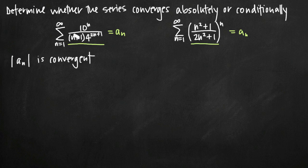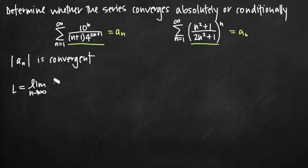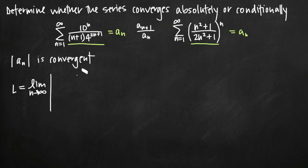In this first example, we have the infinite sum from n equals 1 to infinity of 10 to the n power divided by the quantity n plus 1 times 4 raised to the power 2n plus 1. This is a perfect candidate for the ratio test, which tells us that the limit l equals the limit as n goes to infinity of the absolute value of a sub n plus 1 divided by a sub n.